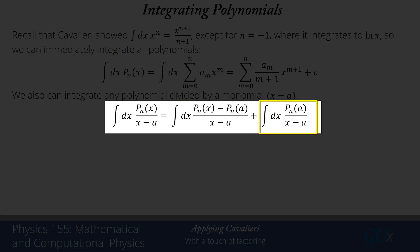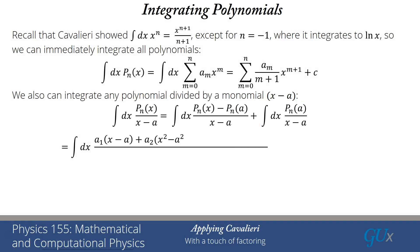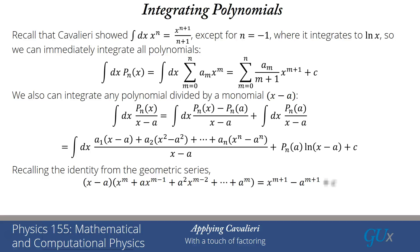The last term, which has P_n(a)/(x - a), I know how to integrate that. That's a logarithm. We have this complicated expansion. Here I'm just writing out explicitly what P_n(x) - P_n(a) is in the numerator. Now you have to remember the identity from the geometric series: (x - a)(x^m + ax^(m-1) + ... + a^m) = x^(m+1) - a^(m+1). If we then invert that and look at solving for the left-hand side, you see there's a factorization. I can write that factorization and now I have a really big and complicated polynomial, but I can just integrate that. So this solves the problem of integrating a polynomial divided by a monomial.